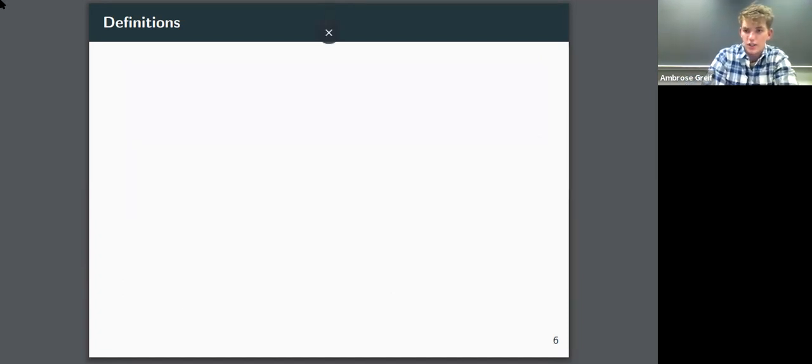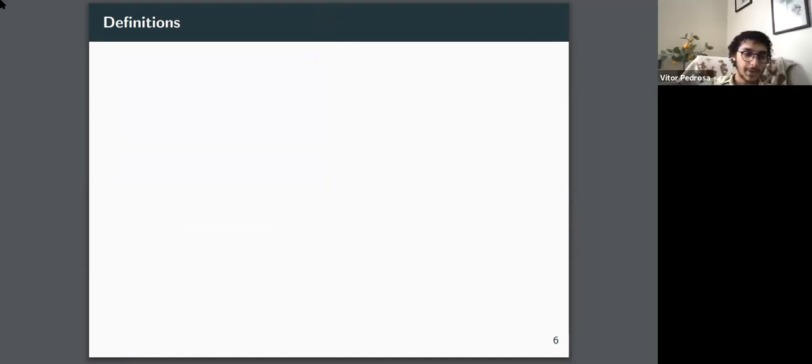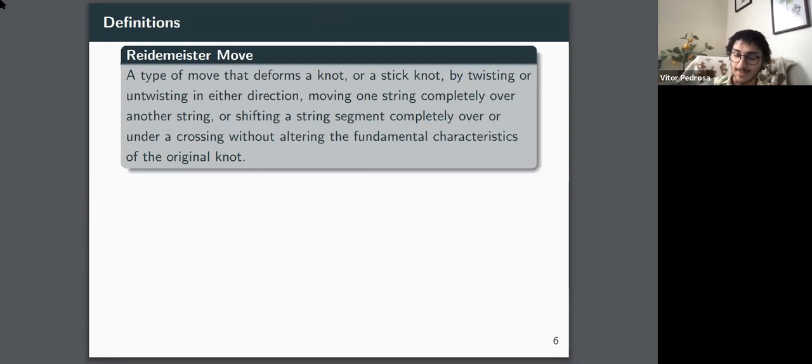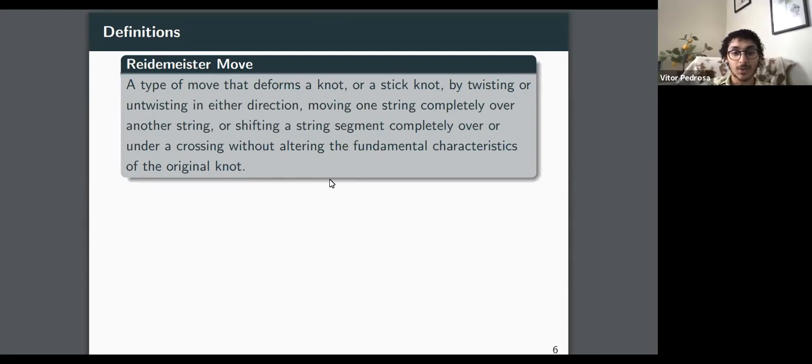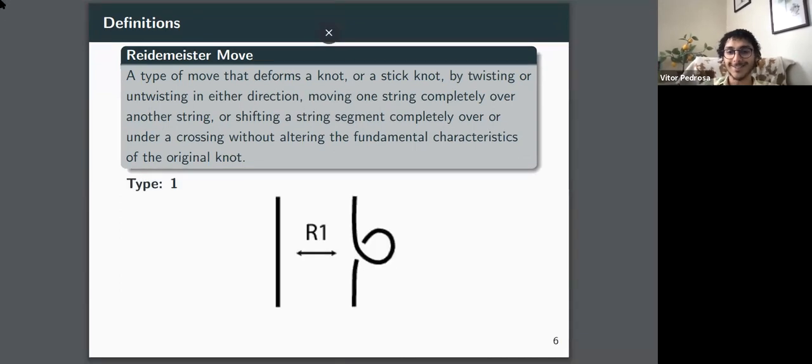So now I'll turn it over to Vitor and he'll take you through a couple more definitions. Thank you, Ambrose. Next slide, please. So when you're dealing with knots, we need a way to manipulate them. And we do that through Reidemeister moves. There are three types of moves. The first one's called twist. Thank you. Which pretty much means that you can, if you have a line segment, you can twist it and you can untwist it. And it won't change or alter the fundamental characteristics of a knot.